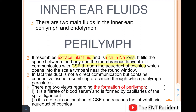The first view states that perilymph is a filtrate of the blood serum and is actually formed by the capillaries of the spiral ligament. The second view states that it is actually a direct continuation of CSF and reaches the labyrinth via the aqueduct of cochlea.